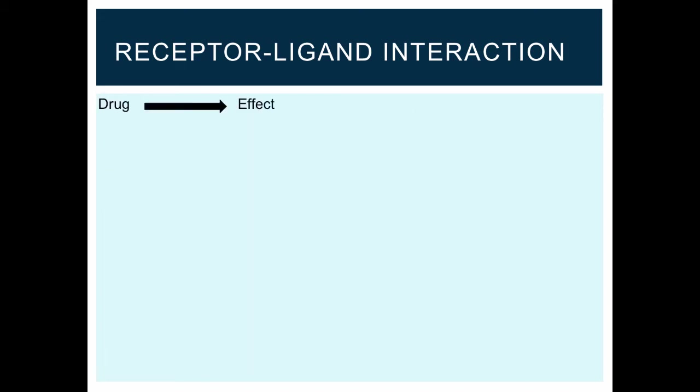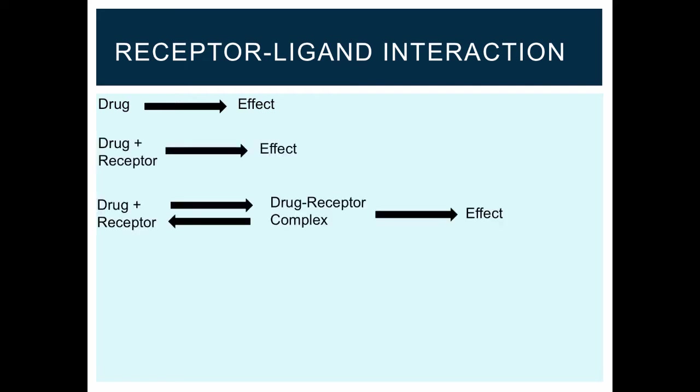So to summarize what we've learned so far, the effect produced by administration of a drug is mediated by receptors. Importantly, the drug and the receptor form a drug receptor complex that is governed by several factors. Drug concentration, association and dissociation constants, and receptor conformation.